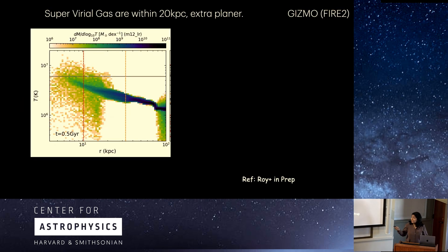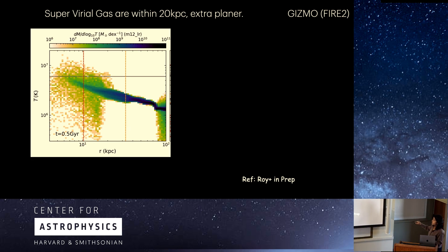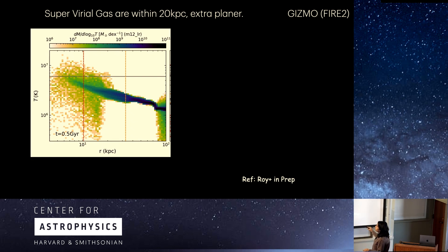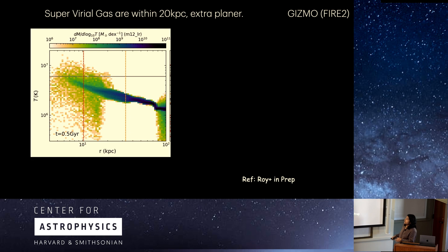We ran a simulation with Gizmo — an idealized box of a Milky Way-type galaxy. Looking at the phase diagram at one snapshot, the horizontal line marks the super virial temperature cutoff, and you can see there is some super virial phase gas within 20 kiloparsecs. The conclusion from this simulation is that the super virial phase is located in the extraplanar region.